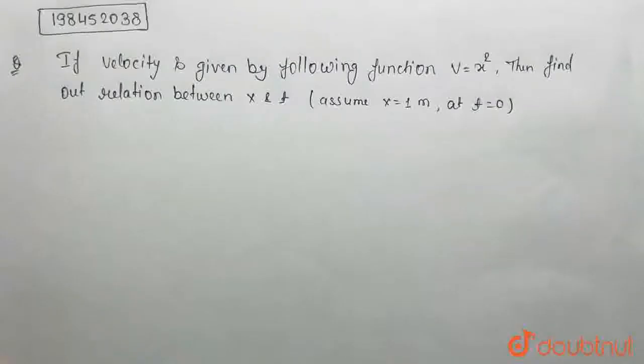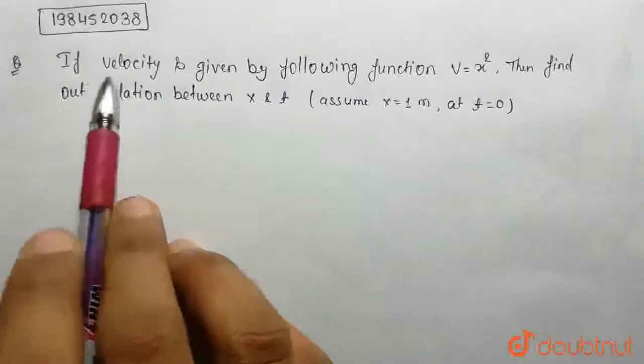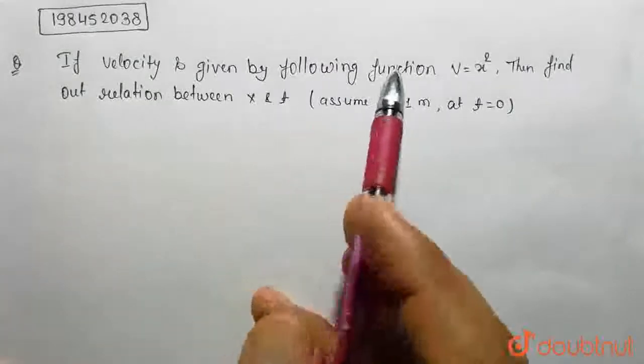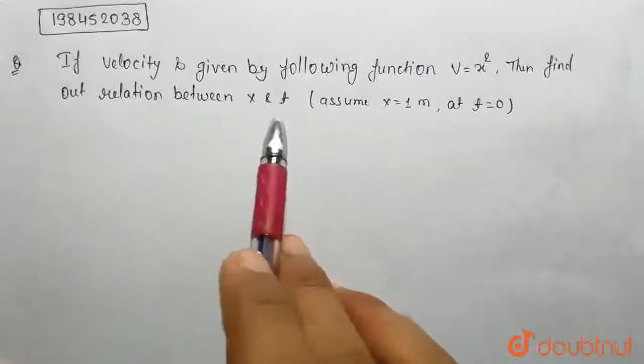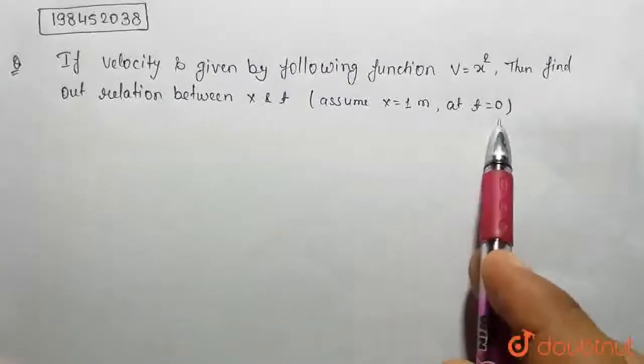Hello student, let's go through the question. The question is, if velocity is given by following function v is equal to x squared, then find out the relation between x and t. Assume x is equal to 1 m, at t is equal to 0.